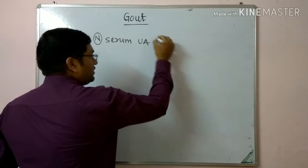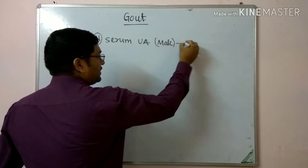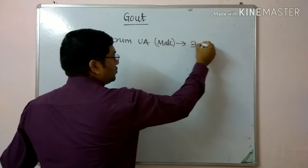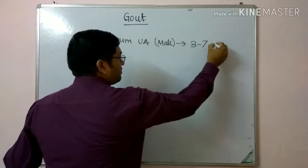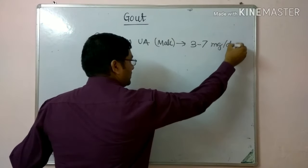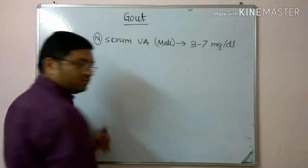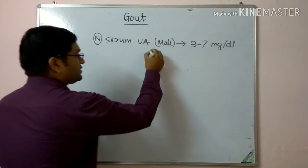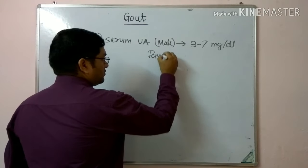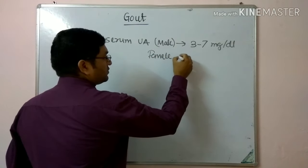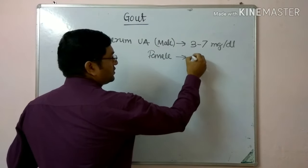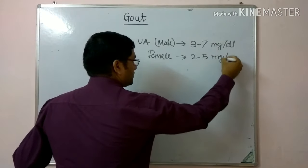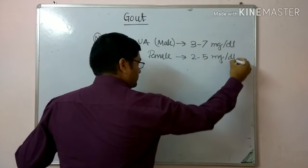There are two main types of gout. The first is primary gout and the second is secondary gout. When there is a defect in the purine nucleotide metabolism it is known as primary gout, and when it is due to other causes it is known as secondary gout.